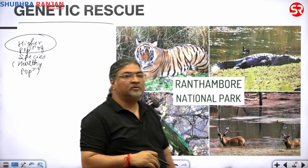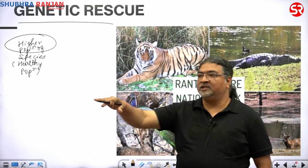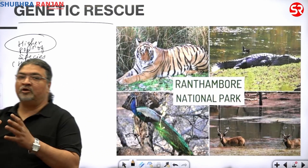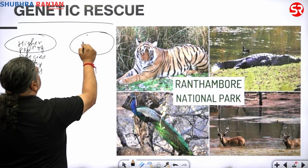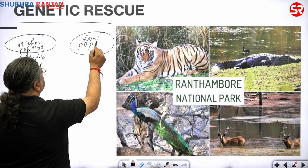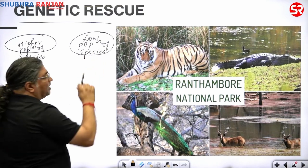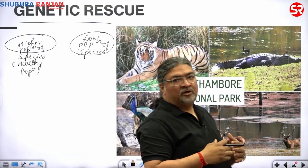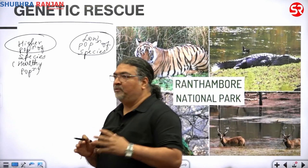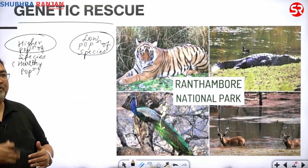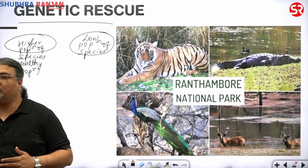What do we mean by genetic rescue? Let us say there is a particular site or protected area which has got a healthy population of more number of a particular animal, and you have another area where there is a low population of that species. Where the population is less, there is always the chance of further decline. If the population is less, with due course of time, if they are not able to reproduce or breed...